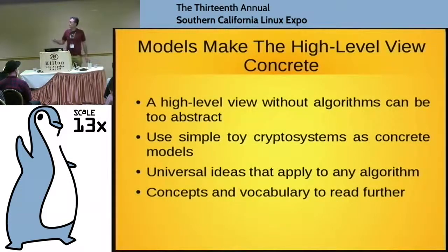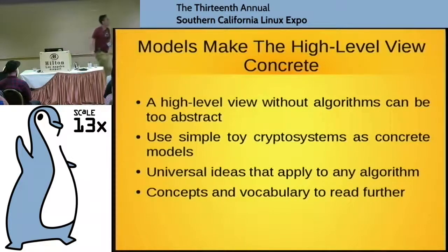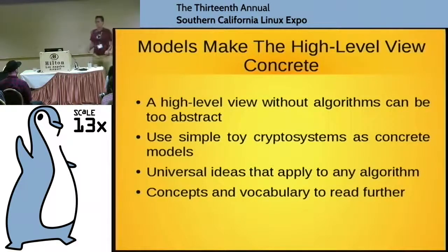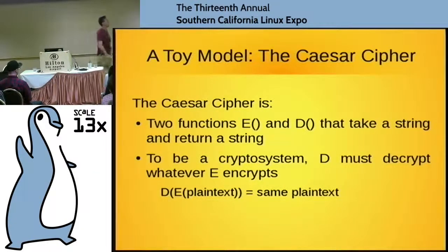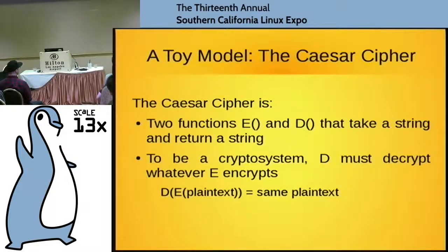So it turns out we can do everything I'm going to need with one of the oldest and simplest of all ciphers — we're just going to do variations on the Caesar cipher. In somewhat modern language, we're going to say this is two functions, E and D for encrypt and decrypt, and these are just functions on strings. Functions are little machines: we put in a string, turn the crank, and out comes another string.